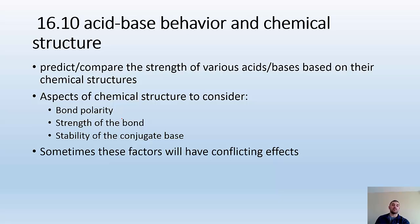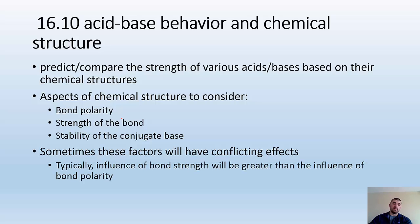Sometimes these factors will have conflicting effects and one will win out over the others. For example, bond polarity may want to make it more acidic, but the strength of the bond wants to make it less acidic — one of those is going to have to win out. Typically, the influence of bond strength will be greater than the influence of bond polarity, and we'll see that later.